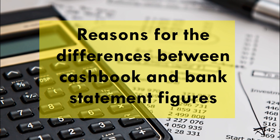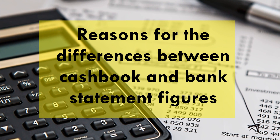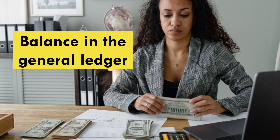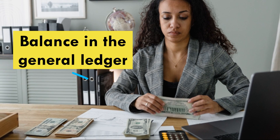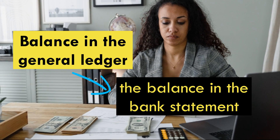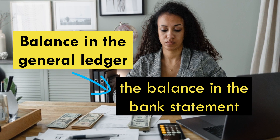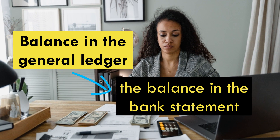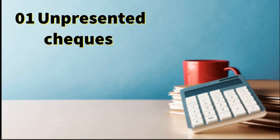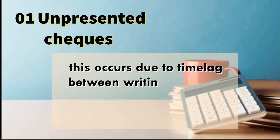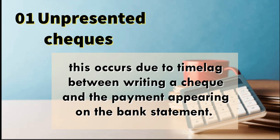Reasons for the differences between cash book and bank statement figures. As already mentioned, the balance in the general ledger should be the same as the balance in the bank statement. However, these two balances do not usually agree for the following reasons. Number one, unpresented checks. This occurs due to time lag between writing a check and the payment appearing in the bank statement.